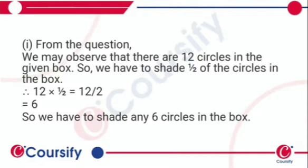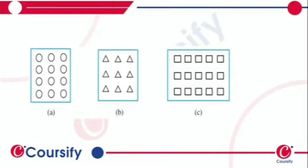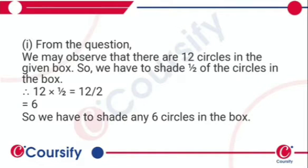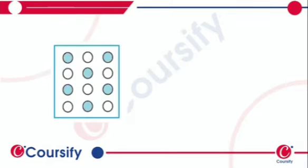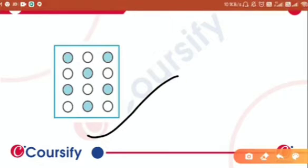We may observe that there are 12 circles in the given box. So we have to shade 1/2 of the circles. 12 × 1/2 = 6. So we have to shade any 6 circles in the box. This is how our box appears.